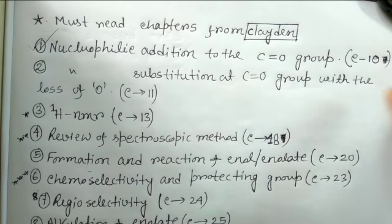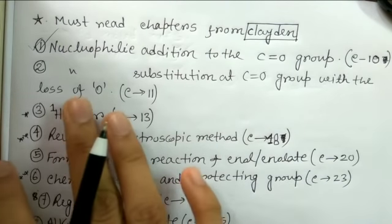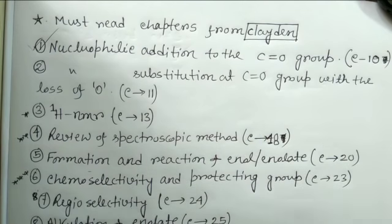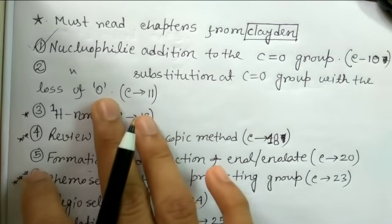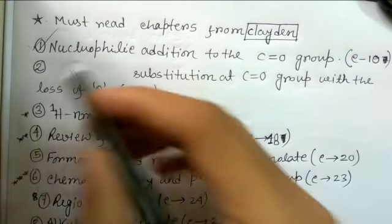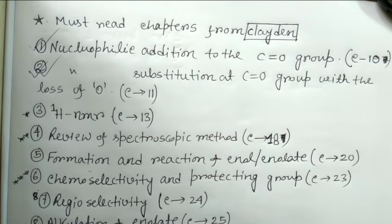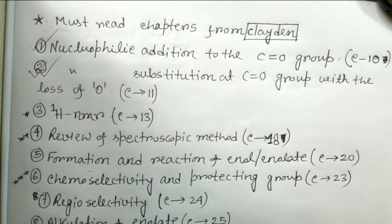The second chapter is again related to the carbonyl group - substitution reactions involving the loss of the carbonyl oxygen group. This is another very important chapter for carbonyl chemistry. There are several chapters in Clayden dedicated to carbonyl chemistry and all are very important because the concepts you'll get from these chapters are brilliant - you can never get that type of concept from any other book.